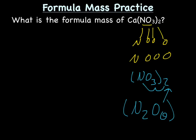So now let's make a list of all of our atoms. We have calcium, we decided we had two nitrogens and six oxygens.